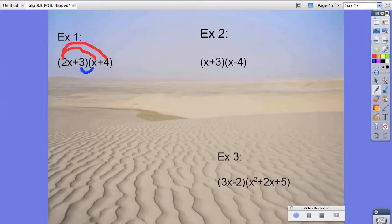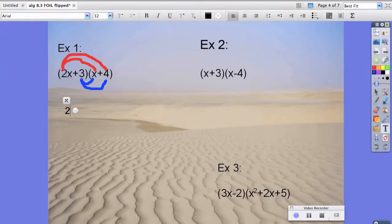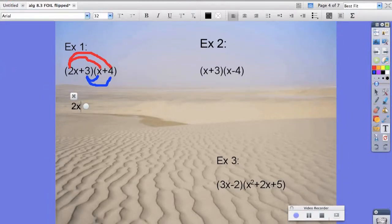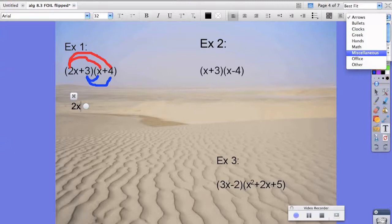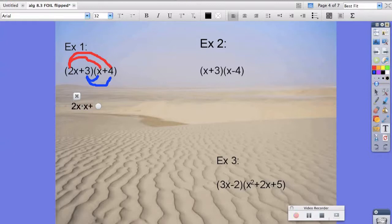and last. So we have 2x times x, plus 2x times 4, plus 3 times x, plus 3 times 4.